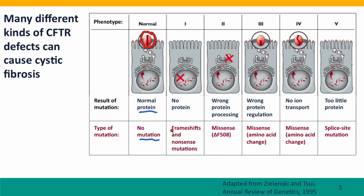In individuals with frameshift mutations or with nonsense mutations — nonsense mutations create stop codons — those cause premature truncation of the protein. Complete protein is not made, and as a result there's no CFTR protein in the cell membrane. Other mutations, in particular the delta F508 mutation, interfere with protein processing. The protein is synthesized normally, but the processing goes wrong, and again there's no mature protein in the cell membrane.